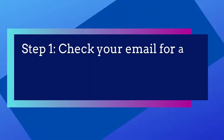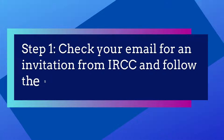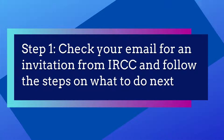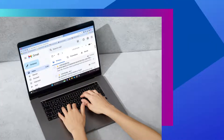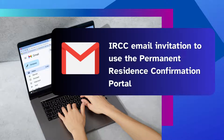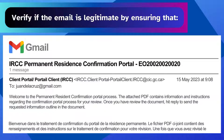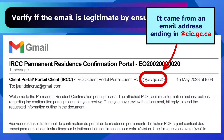Step 1: Check your email for an invitation from IRCC and follow the steps on what to do next. The first thing you should do is check your inbox for an email invitation from IRCC to use the portal. This invitation email will be sent to the email address you provided in your application. Verify if the email is legitimate by ensuring that it came from an email address ending in @cic.gc.ca.